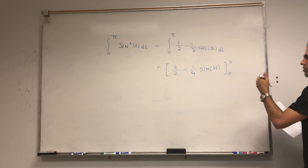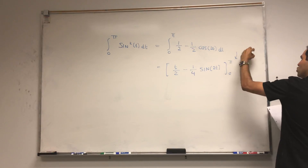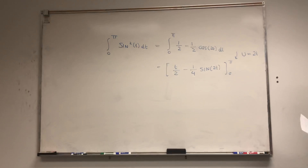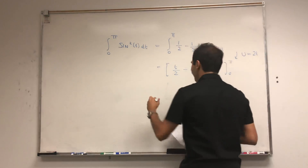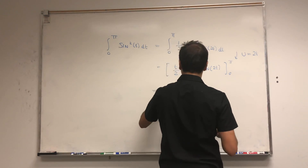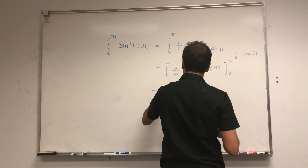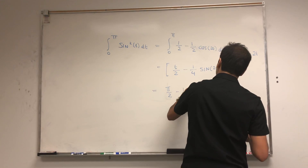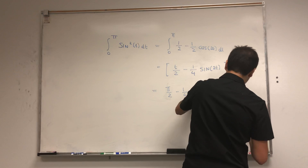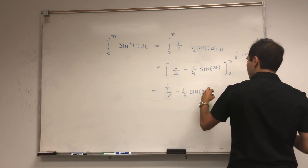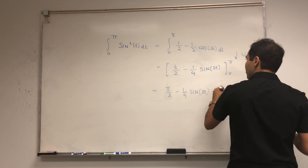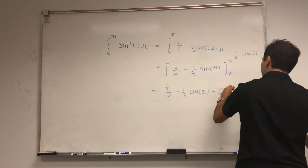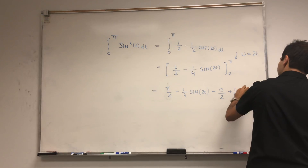If you're in doubt, you could just use a substitution u equals 2t — that would also work. Now all we need to do is plug in our bounds: that's pi over 2 minus one-quarter sine of 2pi, minus 0 over 2 plus one-quarter sine of 0.